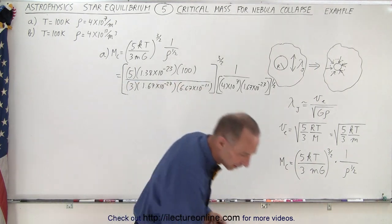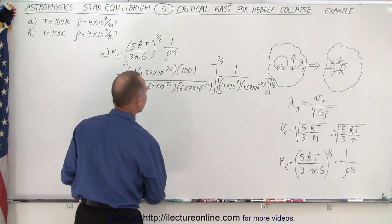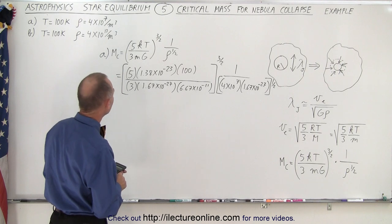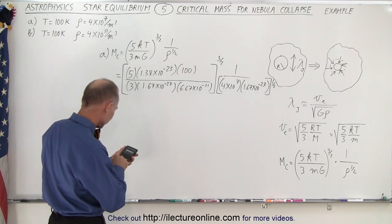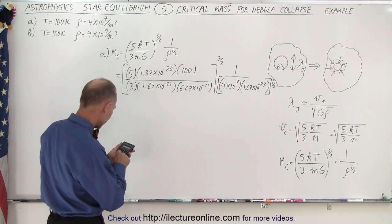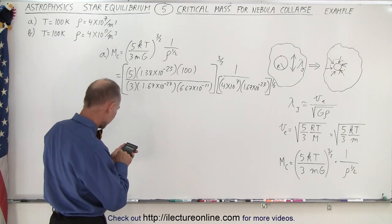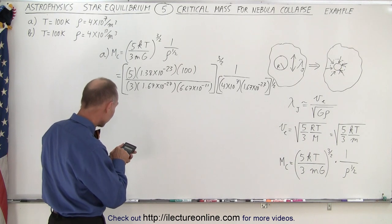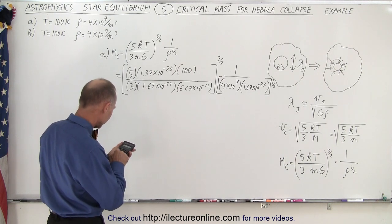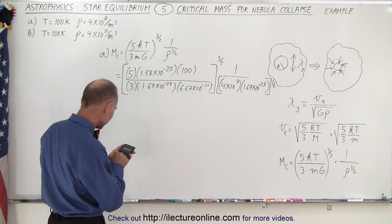All right, now we need a calculator. So here's how that's done. 5 times 1.38 e to the minus 23 times 100 divided by 3 divided by 1.67 e to the minus 27 divided by 6.67 e to the minus 11 equals.